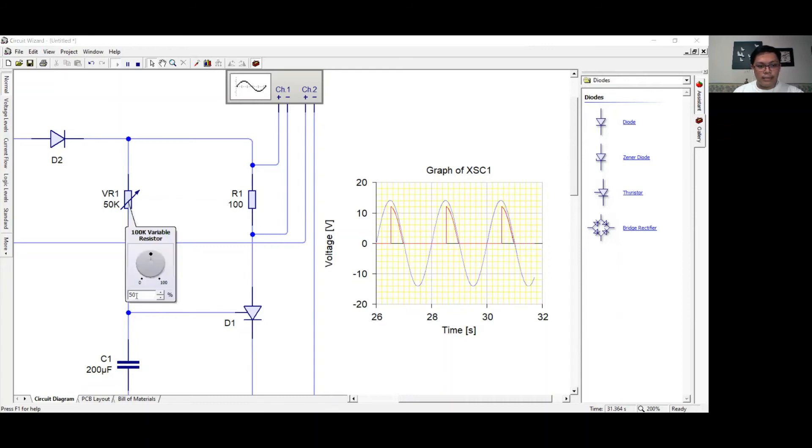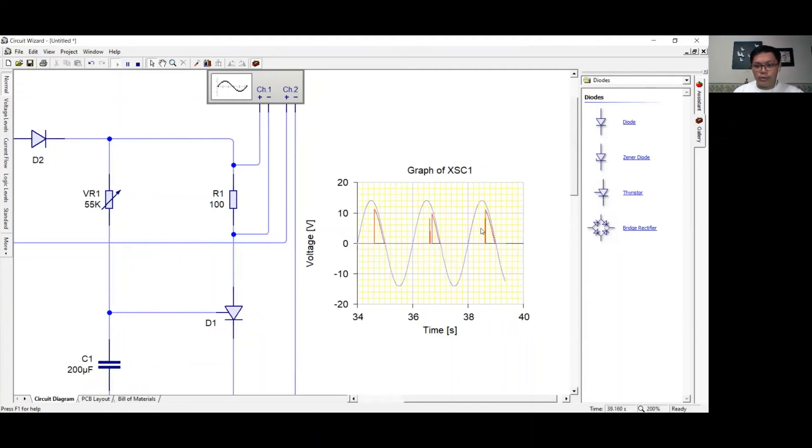As I increase the resistance, a delay will occur into the firing angle and it will be greater than 90 degrees because of the capacitor. Normally, the firing angle cannot exceed 90 degrees if there is no capacitor present.